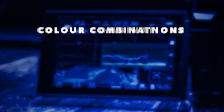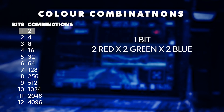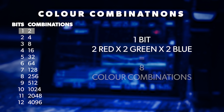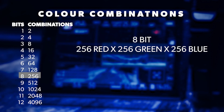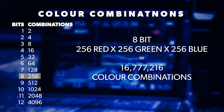In this diagram of colour bits, a 1-bit colour codec records 2 versions of red, 2 of green, and 2 of blue to make 8 colour combinations. An 8-bit codec records 256 combinations of red, 256 of green, and 256 of blue to make 16 million colour combinations.